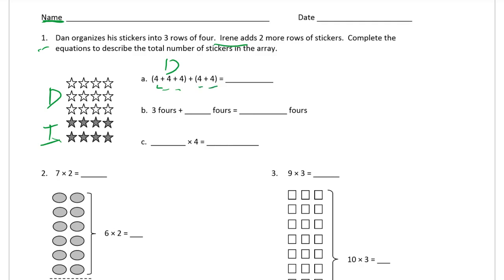These two rows of four — these two fours — are Irene's stickers. All those fours together: there are five fours, which is twenty. You can also count the columns and get five, ten, fifteen, twenty — counting by fives instead of fours. Three fours plus two fours is five fours, and five fours equals twenty.